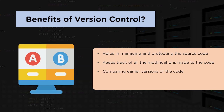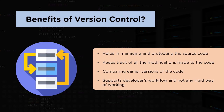The third advantage is comparing earlier versions of the code. Since all versions of the source code are saved, developers can go back at any time and compare earlier versions of the code to help fix mistakes while reducing disruption to all team members.